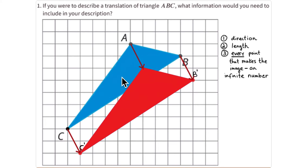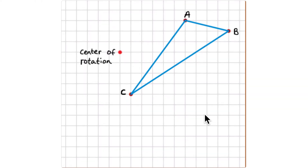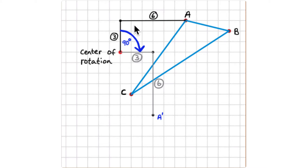You have to keep both the length and the direction of the translation the same for every single point. For a rotation, you need three pieces of information: where the center of rotation is — let's choose an interesting point rather than one on the triangle — and the number of degrees of rotation. Using this grid, I'll make a 90-degree rotation by counting three units up and six units over, then rotating that to be along the x-axis.